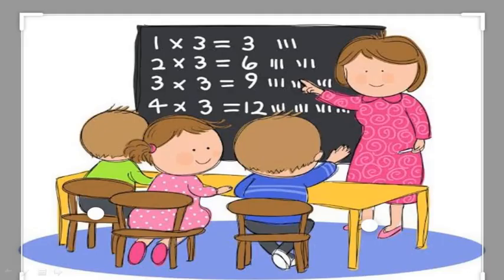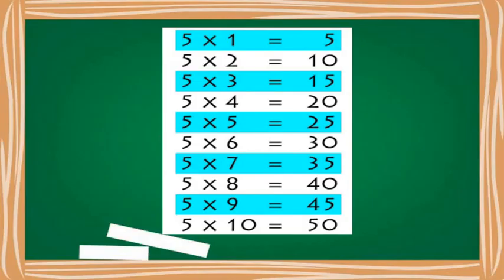Do you understand how to make subtraction? Today we have understood how to make subtraction with different objects and different examples. Till now, we have learned tables of 1, 2, 3, and 4. Now we are going to start the table of 5. Are you all ready, my dear students? Shall we start? You all have to repeat the tables after me.